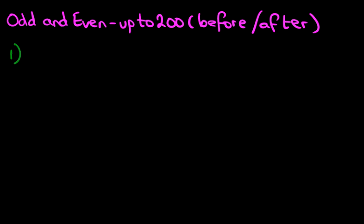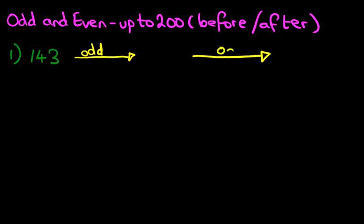Now let's suppose we have this number here, 143. And the question that is being asked is, what are the next two odd numbers? That's the first one and the second one. So what are the next two odd numbers after this number? We're even going to draw the boxes over here.